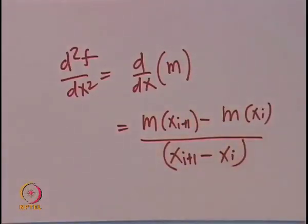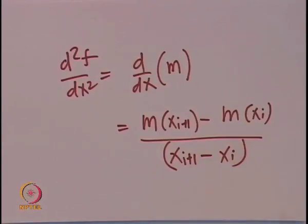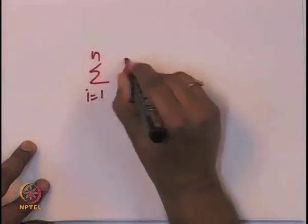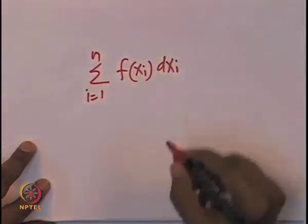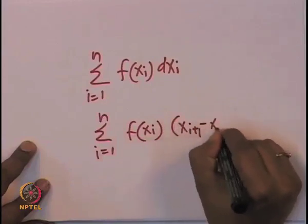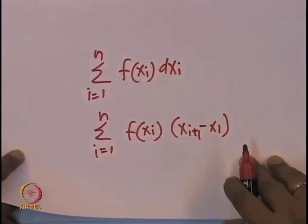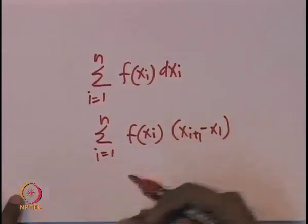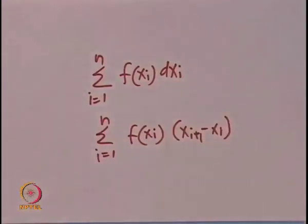You can extend this to higher derivatives as well. The second derivative d²f/dx² is d/dx of the slope m, which gives [m(x_{i+1}) - m(x_i)] / [x_{i+1} - x_i]. Similarly, integration of data can be written as the sum over i from 1 to n of f(xi)·(x_{i+1} - x_i). These ideas can be extended to numerical methods, which is a course in itself.